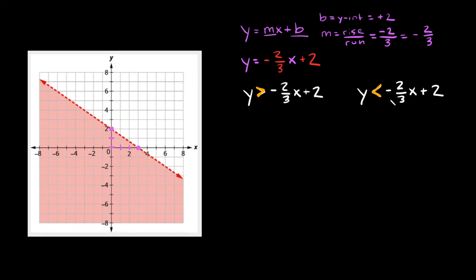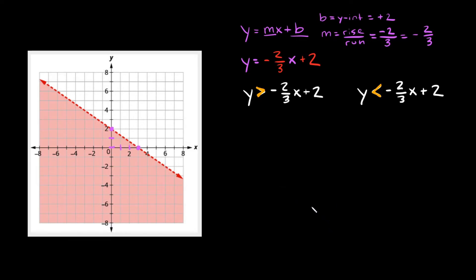One of these two inequalities is going to be your answer, and the way you figure that out is by looking at your graph. You can see there's a shaded region — all you want to do is pick a point inside that shaded region and plug it into both inequalities. One will give you a true statement and the other a false statement, and the one with the true statement is your answer.